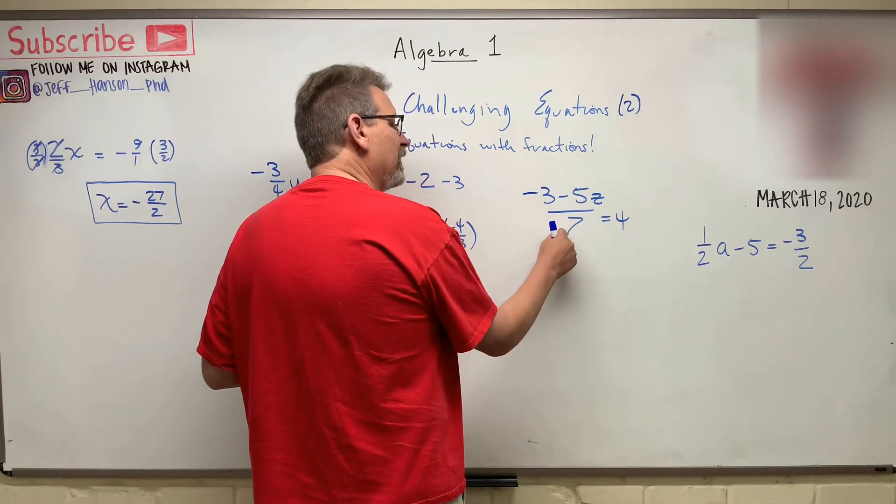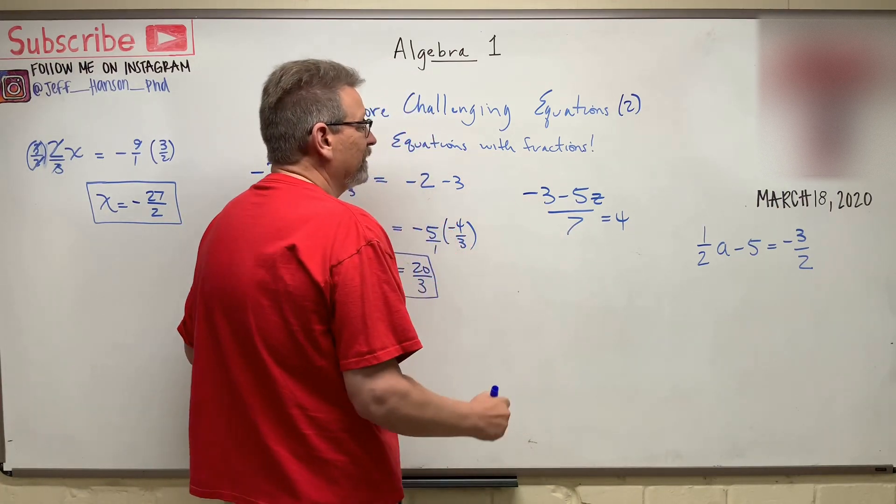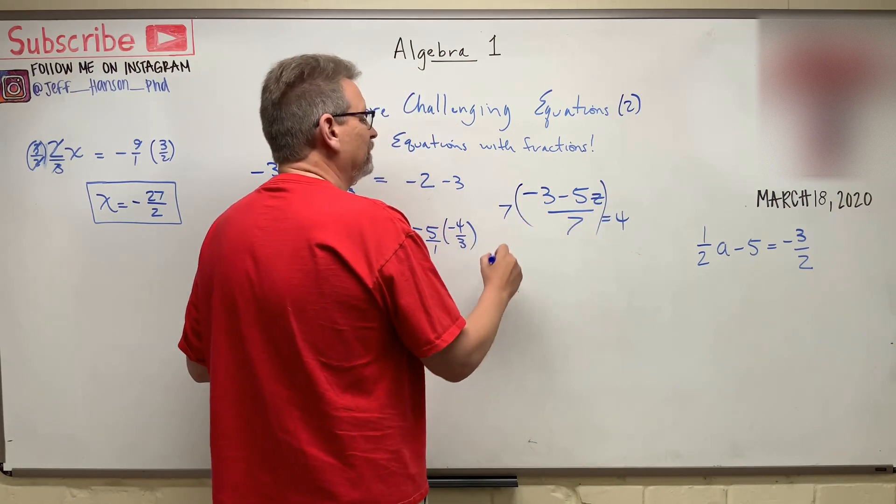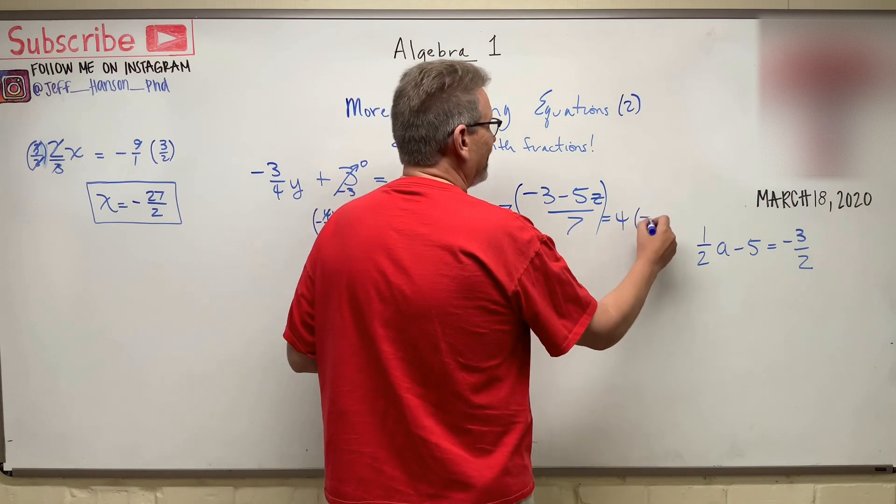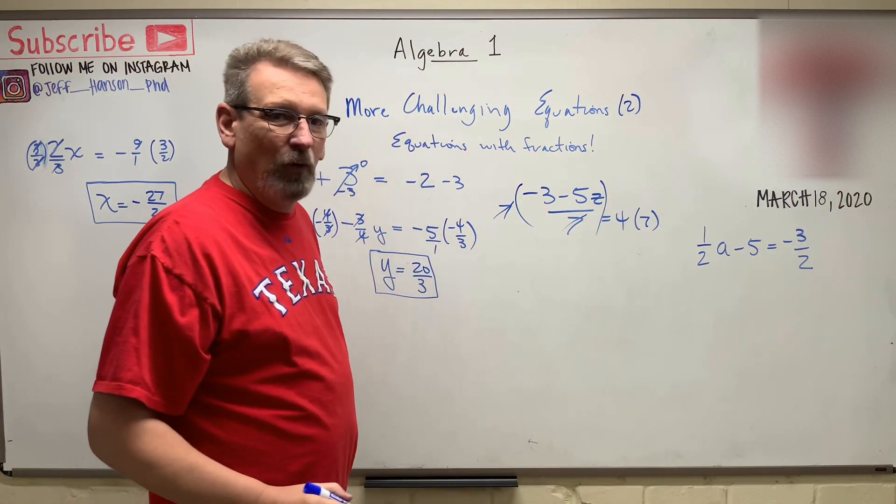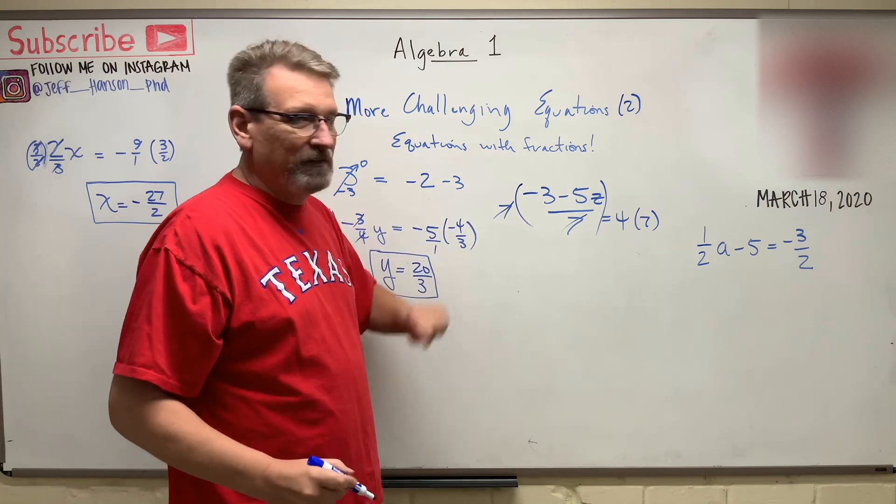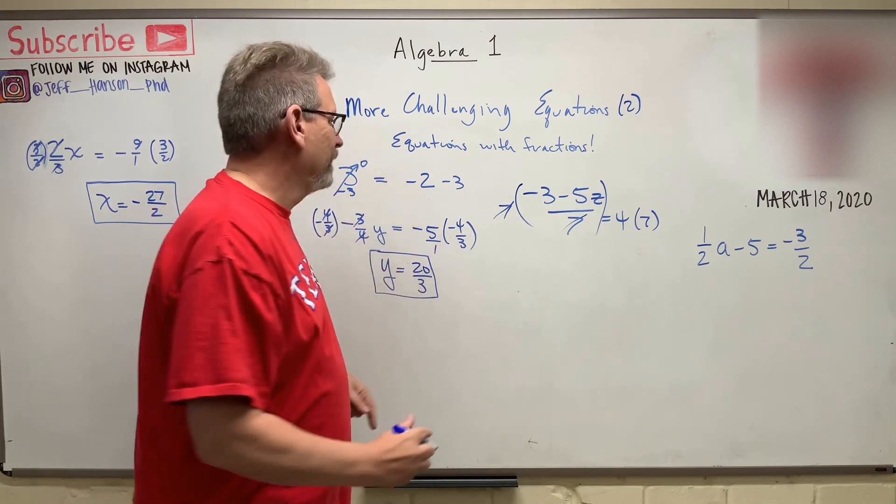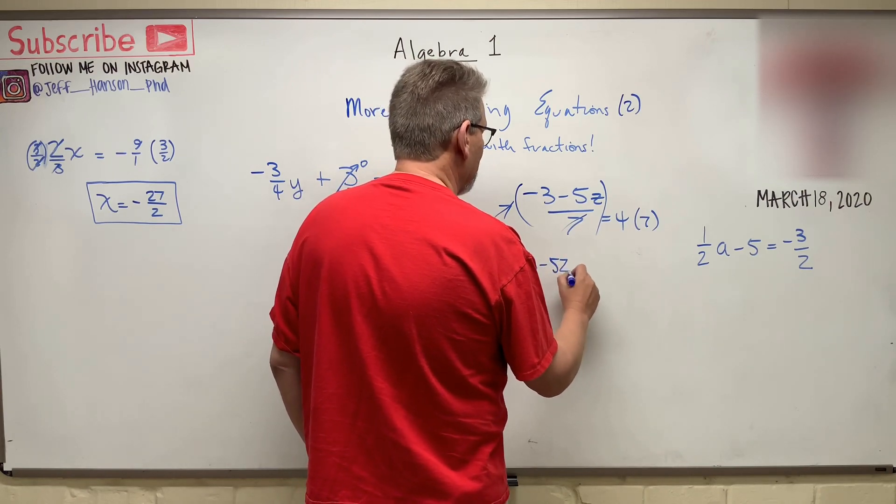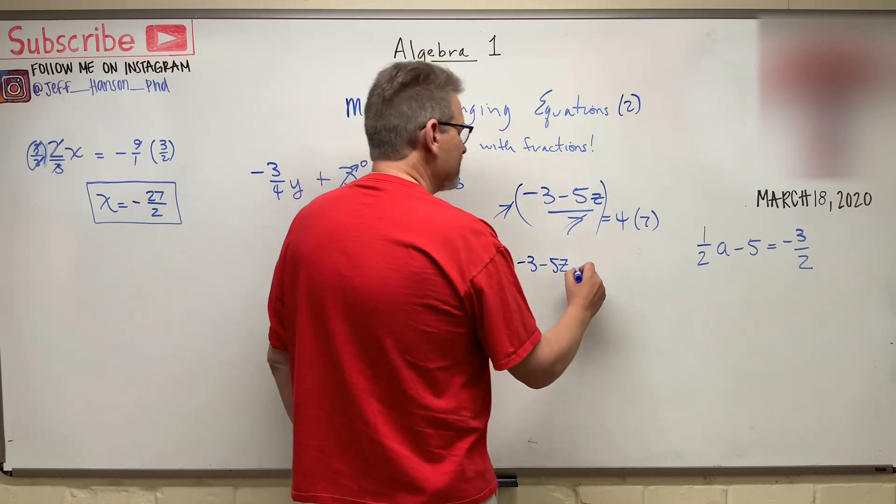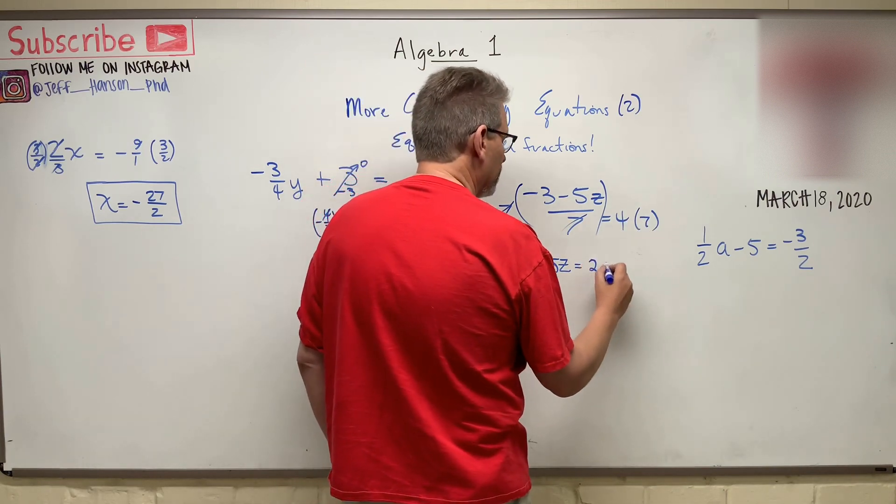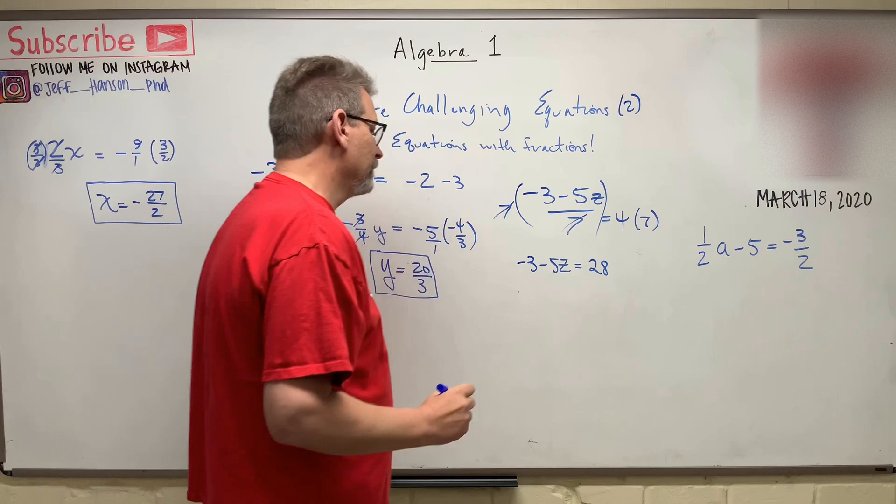Okay, so the very first thing is I'm going to get rid of this denominator. You know what I'm going to do? If I multiply this whole thing by seven and multiply this side by seven, the sevens will go away, won't they? They'll divide away. Seven over seven gives me how much? One. So now this side becomes minus three, minus five z. And this side over here becomes four times seven, which is 28, right?